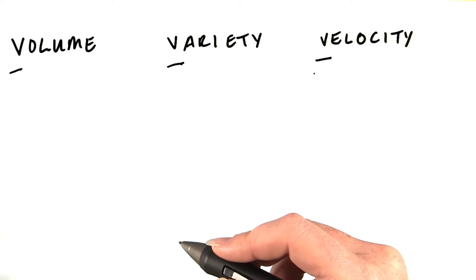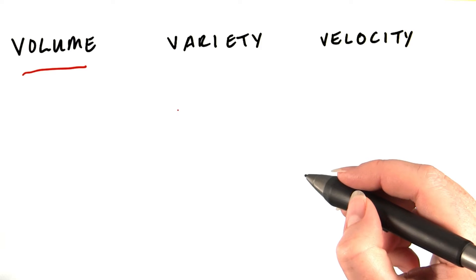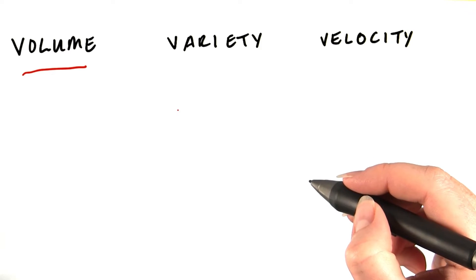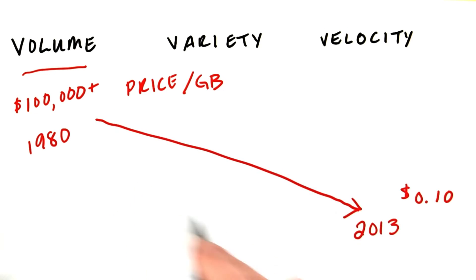Let's look in more detail at each of these. Starting with volume, the price to store data has dropped incredibly over the last 60 years. In 1980, the cost per gigabyte was several hundred thousand dollars. In 2013, it's merely 10 cents.